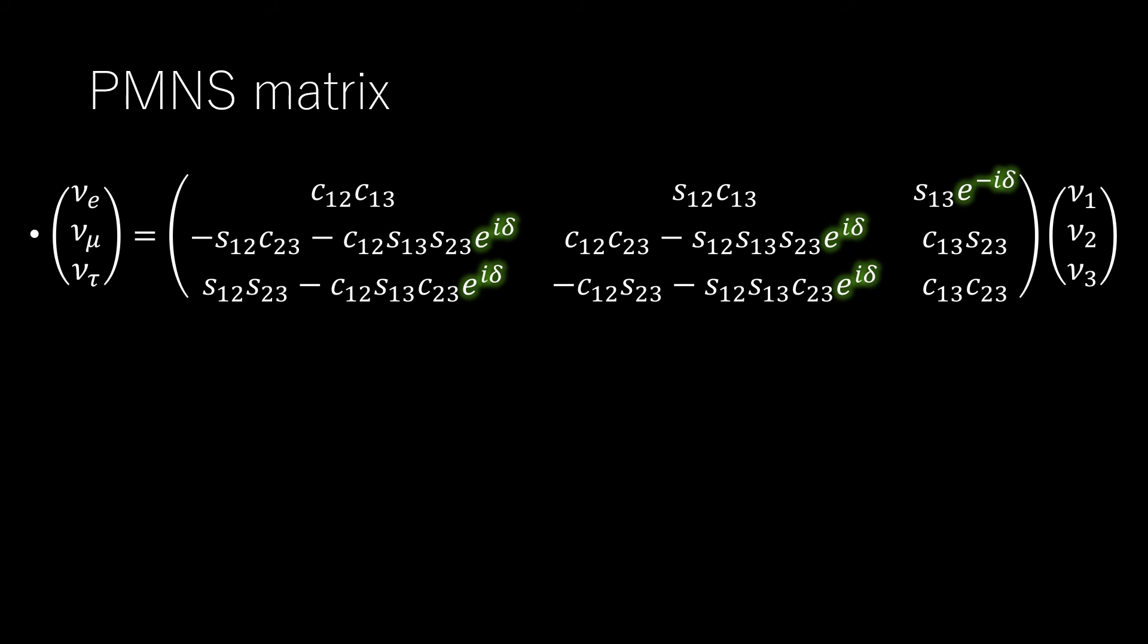Finally, a complete discussion of neutrino oscillations must incorporate mixing between all three neutrino states, rather than just two. The most general form of this mixing can again be written in the standard form.